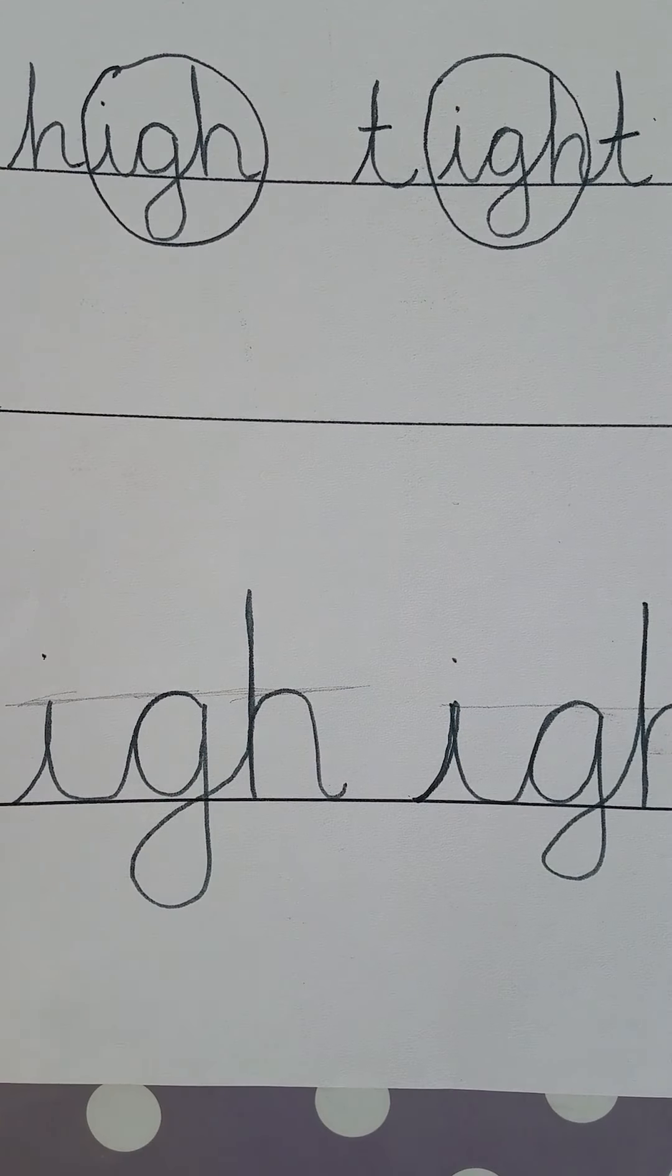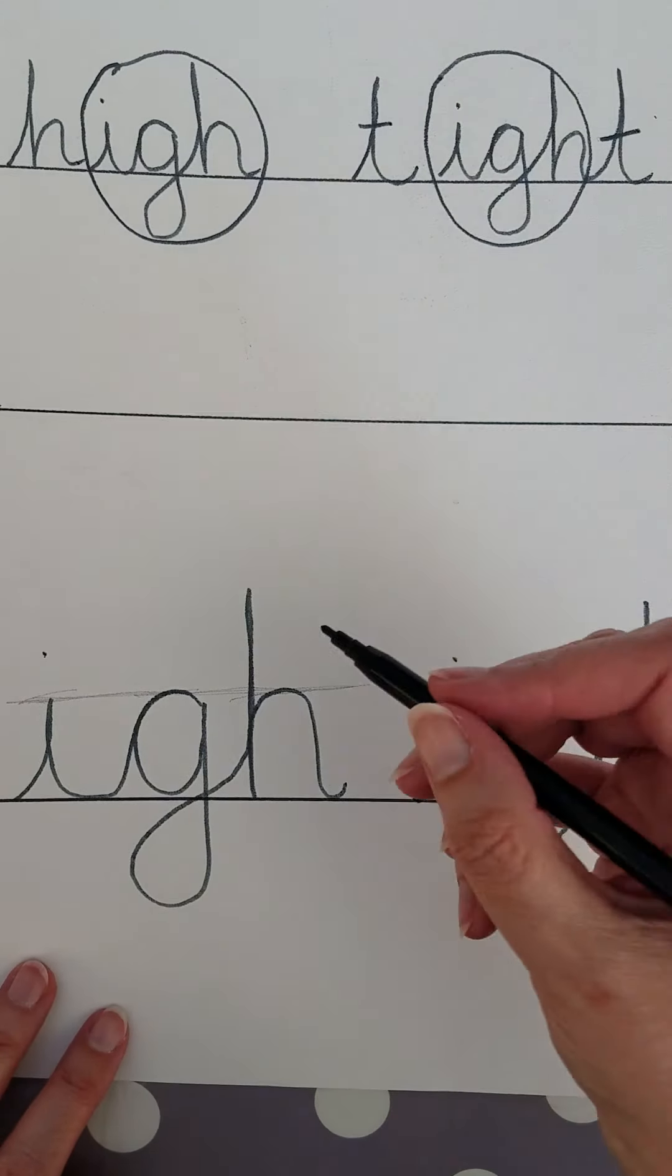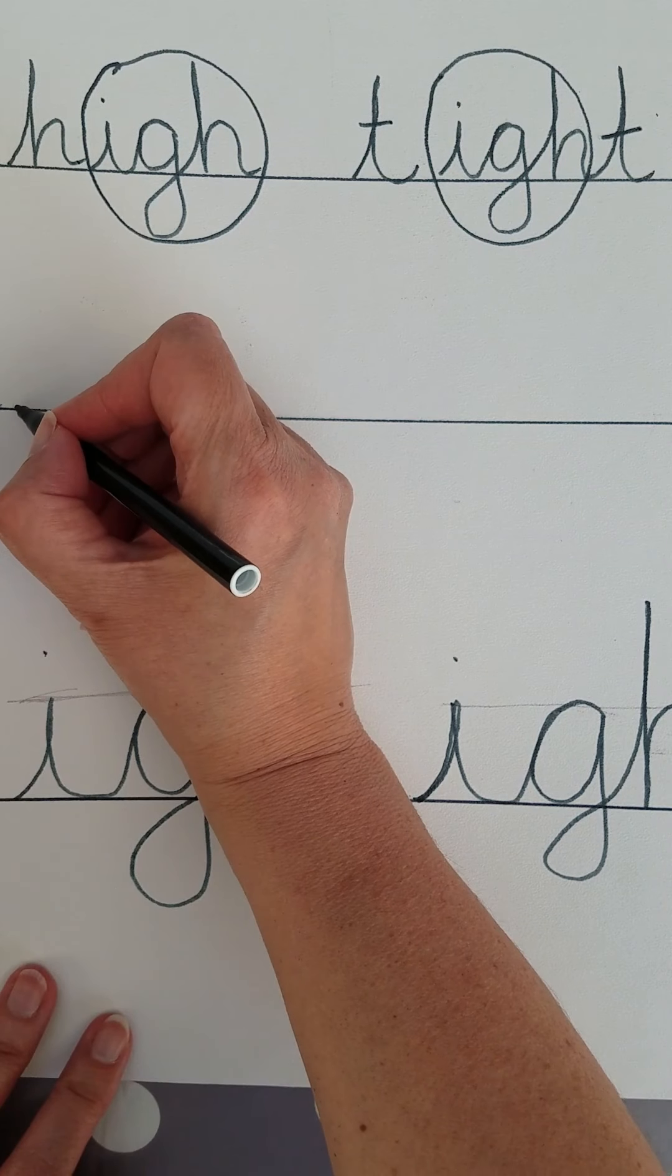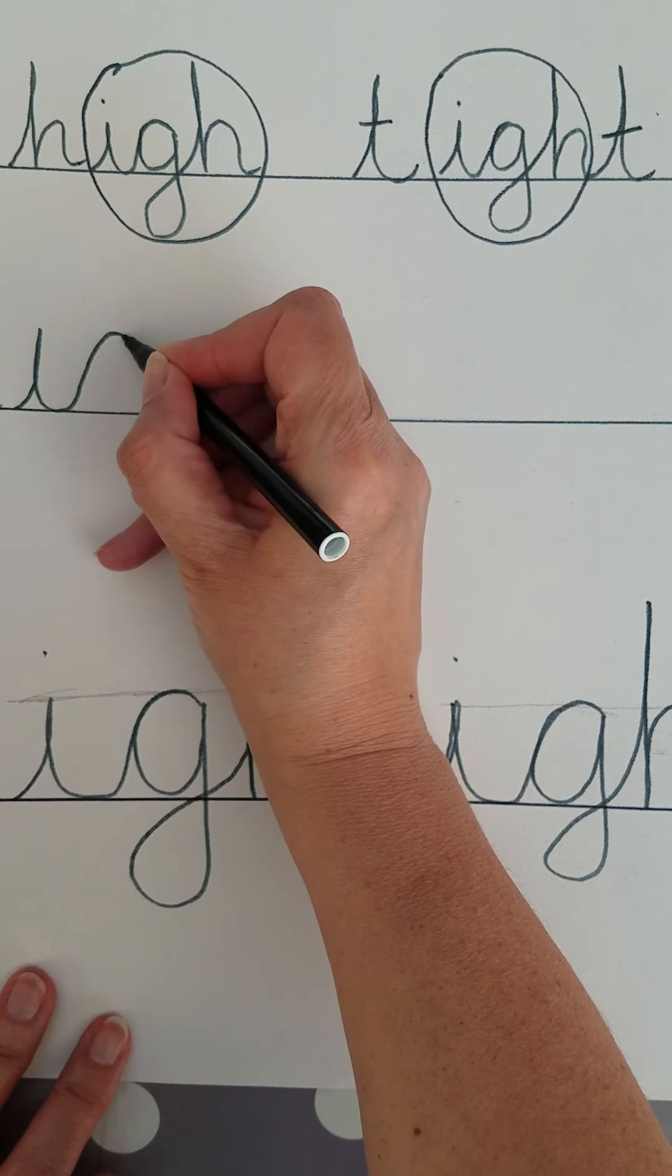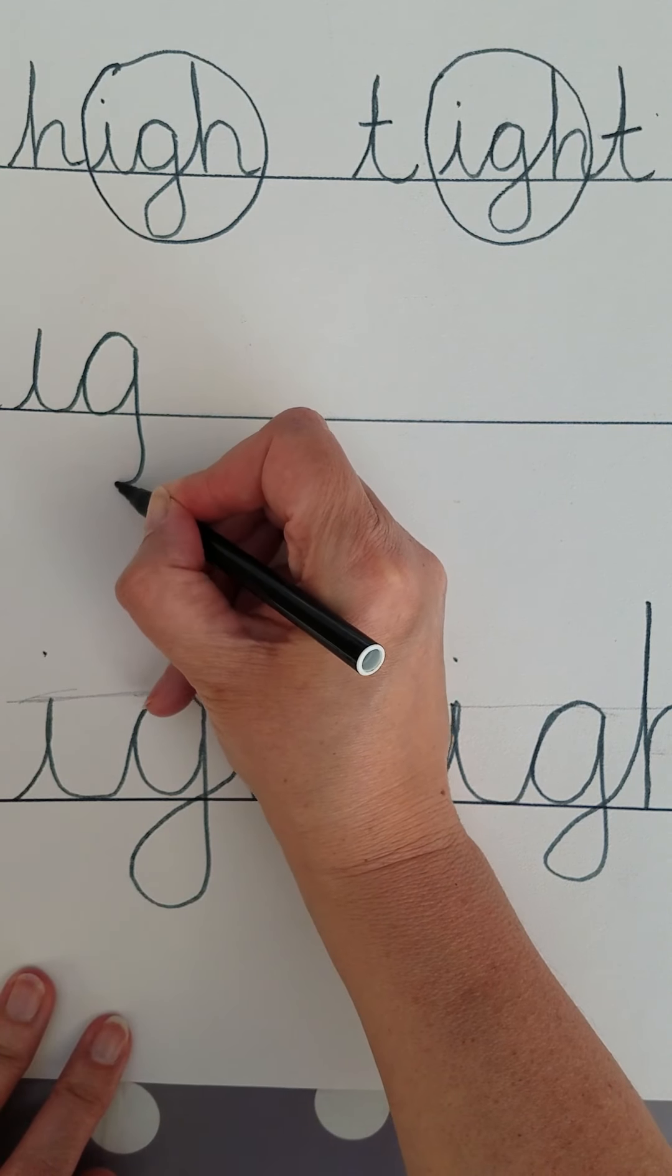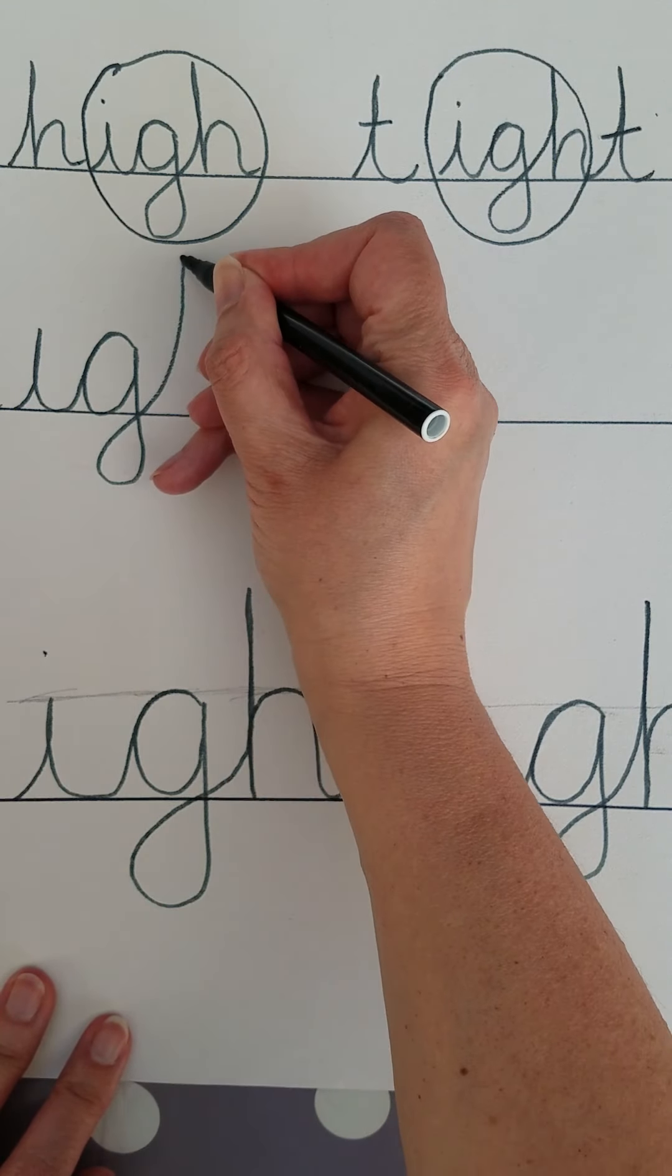It's a trigraph, which means it's made up of three letters: I, G, H. Tri for trigraph means three. This is the sound I.